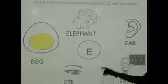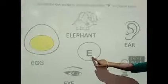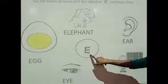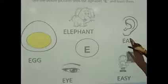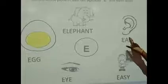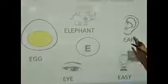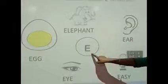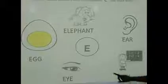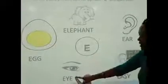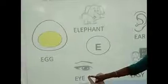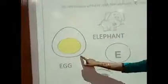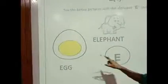Again we will revise letter E. What is this? This is letter E. E — ear. Kya hota hai E say? E, ear. E, easy. E, eye. Kya hota hai? E, eye. E, eggs. E, elephant.